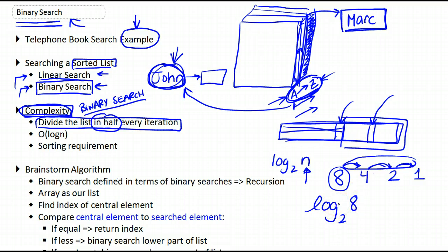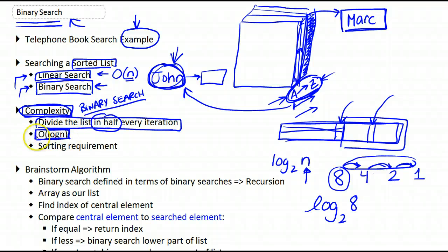And this is why we say that our algorithm runs in O(log n). This is a significant improvement over linear search, which ran in O(n). O(n) means we examine every single element of the list, whereas here we are eliminating half of the list every time, which provides a significant improvement. The only issue with binary search is the sorting requirement — we need to deal with a list that is sorted. If the list is not sorted and we cannot search based on that sorting, then we cannot use binary search.